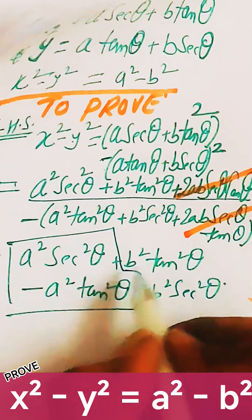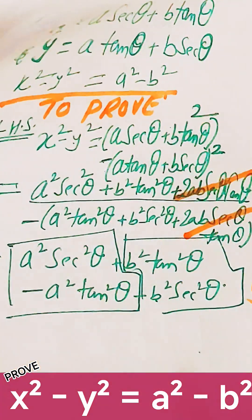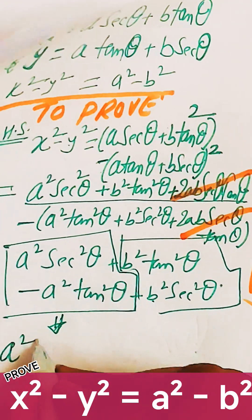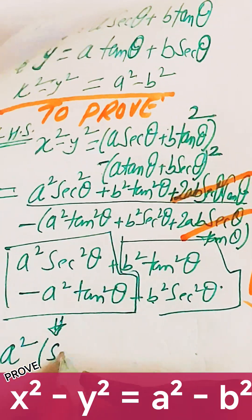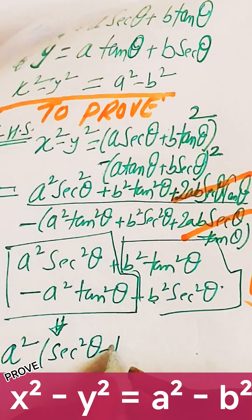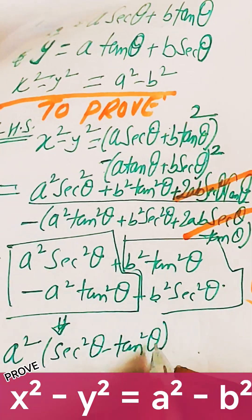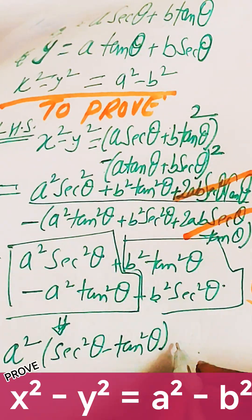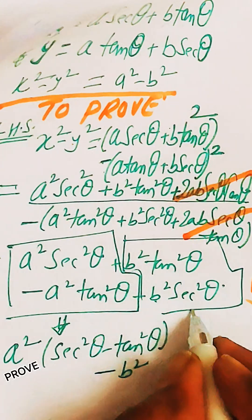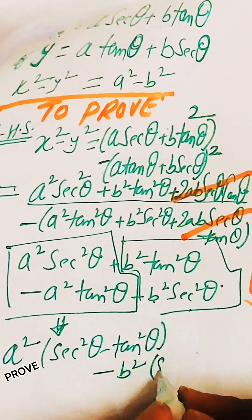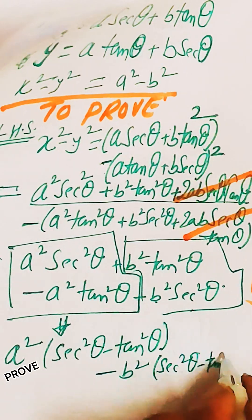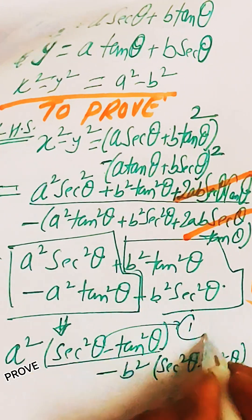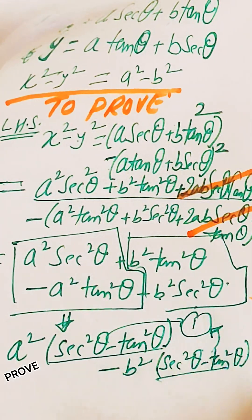Now pair the first and third terms, and the second and fourth terms. Taking a² as common from the first pair gives a²(sec²θ - tan²θ). Taking b² as common from the second pair gives minus b²(sec²θ - tan²θ). Since sec²θ - tan²θ = 1, both bracket terms equal 1.